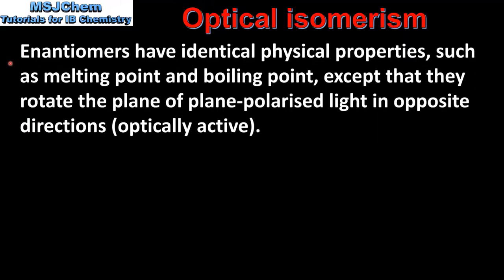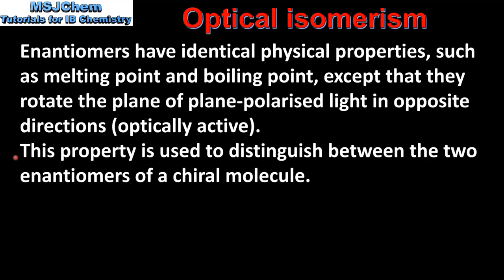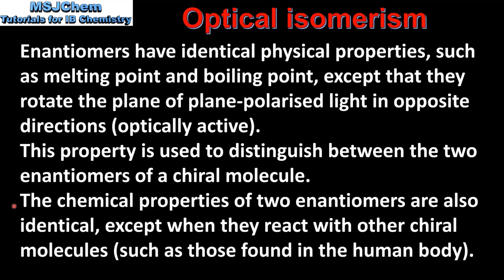Enantiomers have identical physical properties such as melting point and boiling point, except that they rotate the plane of plane-polarized light in opposite directions, which means they are optically active. This property is used to distinguish between the 2 enantiomers of a chiral molecule — we will look at this in more detail in the next video. The chemical properties of 2 enantiomers are also identical, except when they react with other chiral molecules such as those found in the human body.